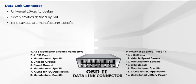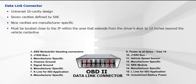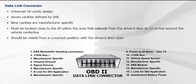Be aware that some cavities in the DLC may not contain pins, regardless of whether the cavity is SAE or manufacturer specific. For example, SAE cavities 2, 7, 10, and 15 are reserved exclusively for data transmission lines or bus circuits. OBD2 vehicles are required to have the DLC located close to the instrument panel within the area that extends from the driver's door to 12 inches or 300 millimeters beyond the vehicle center line. You should be able to spot the DLC from a crouched position with the driver's door open.